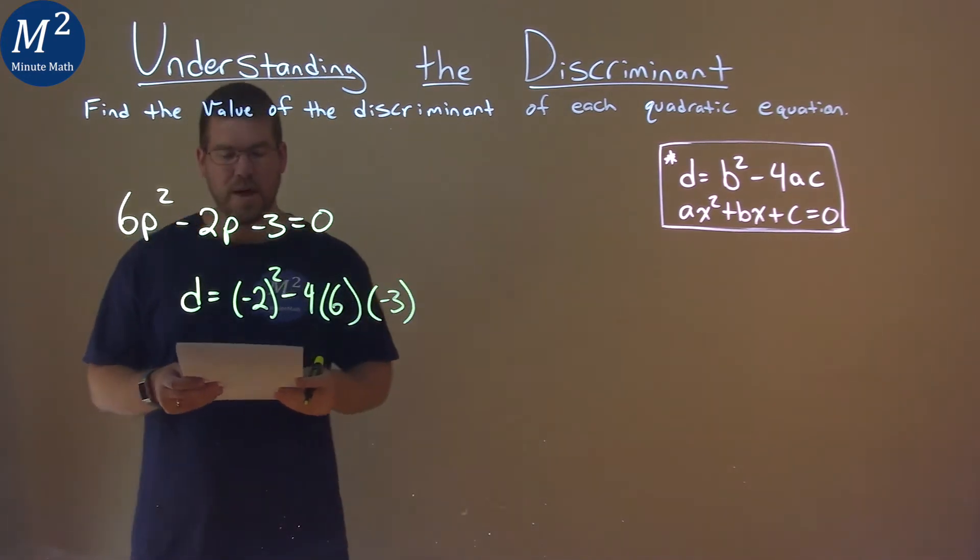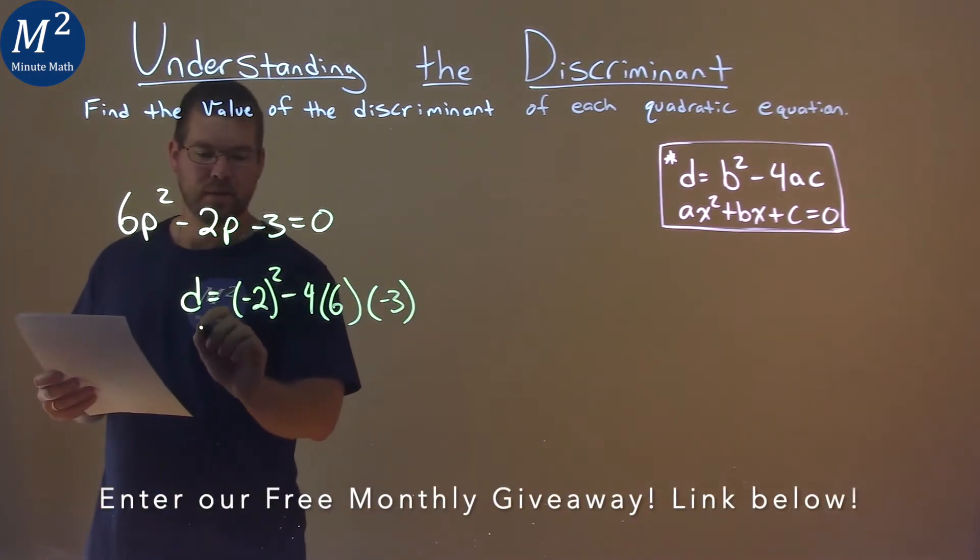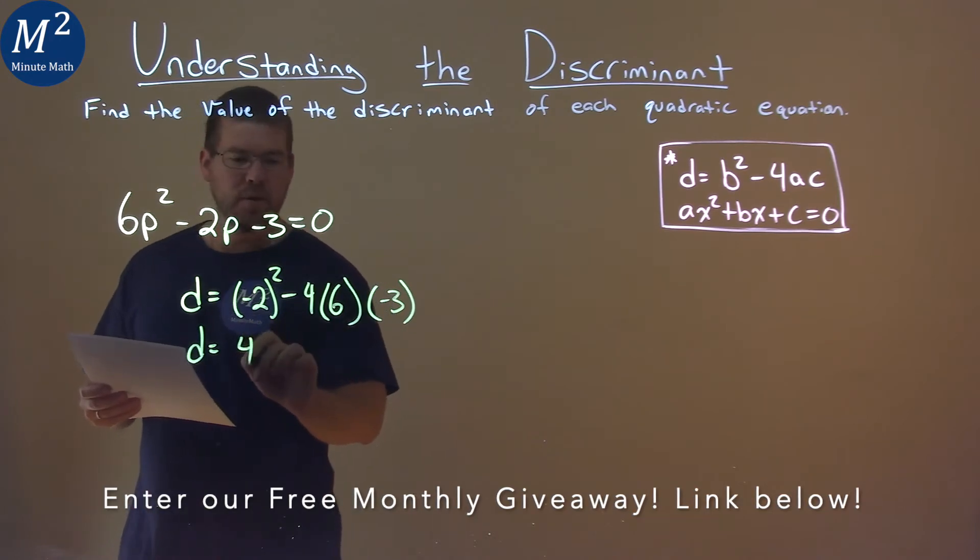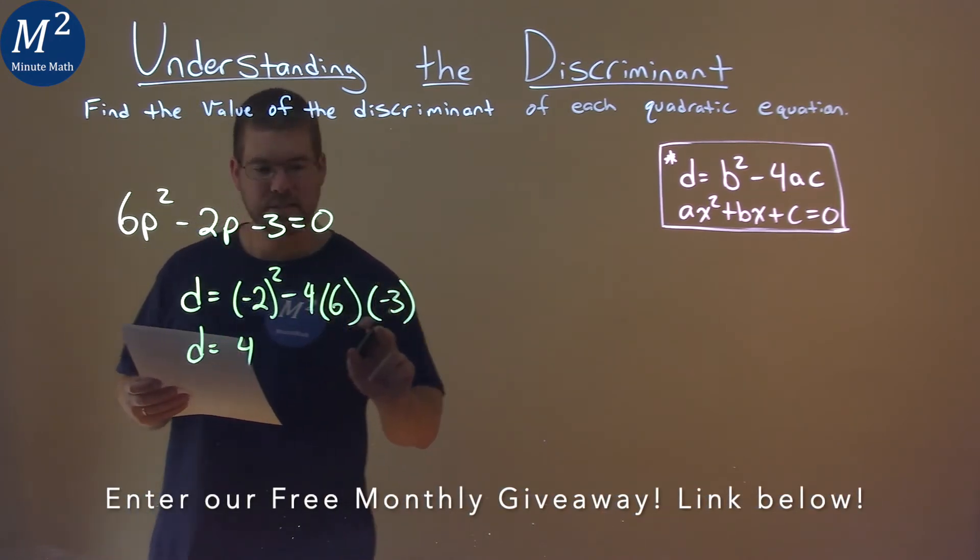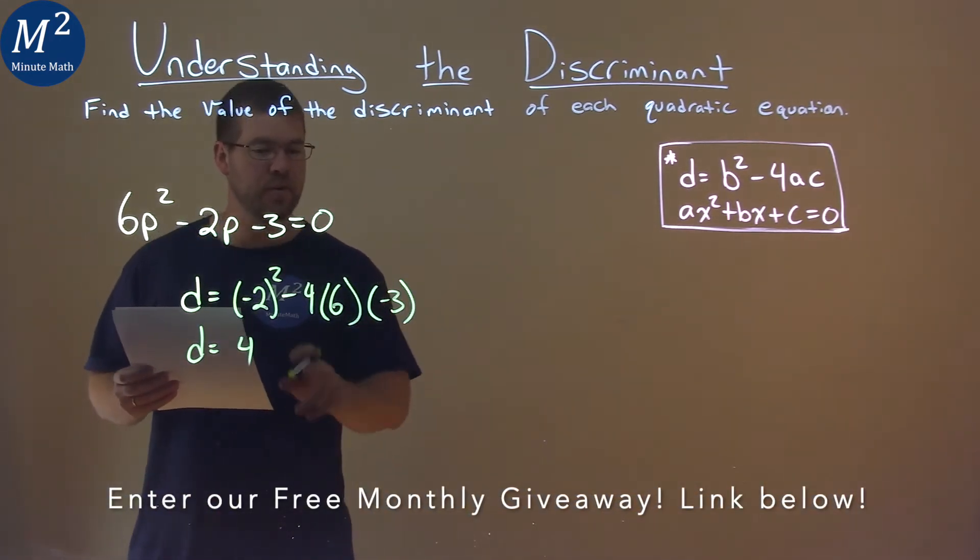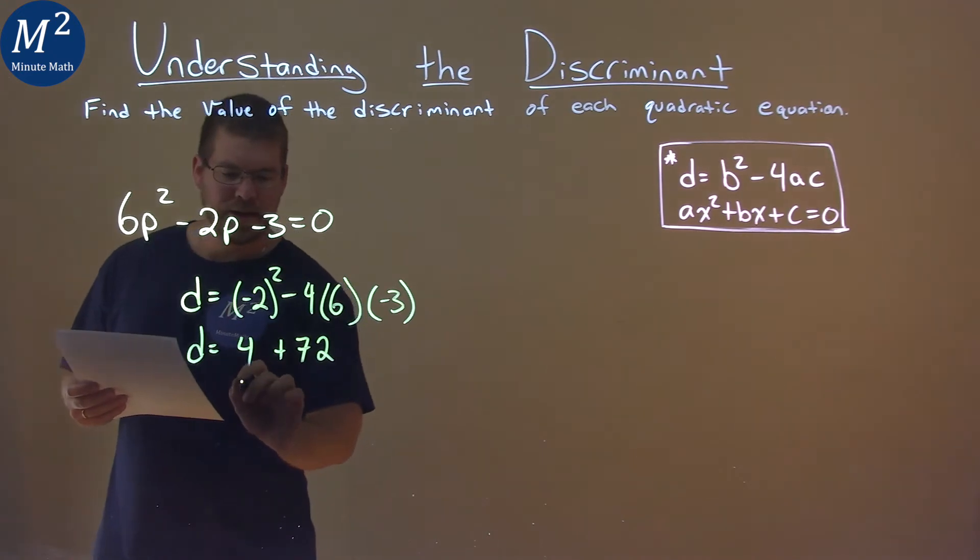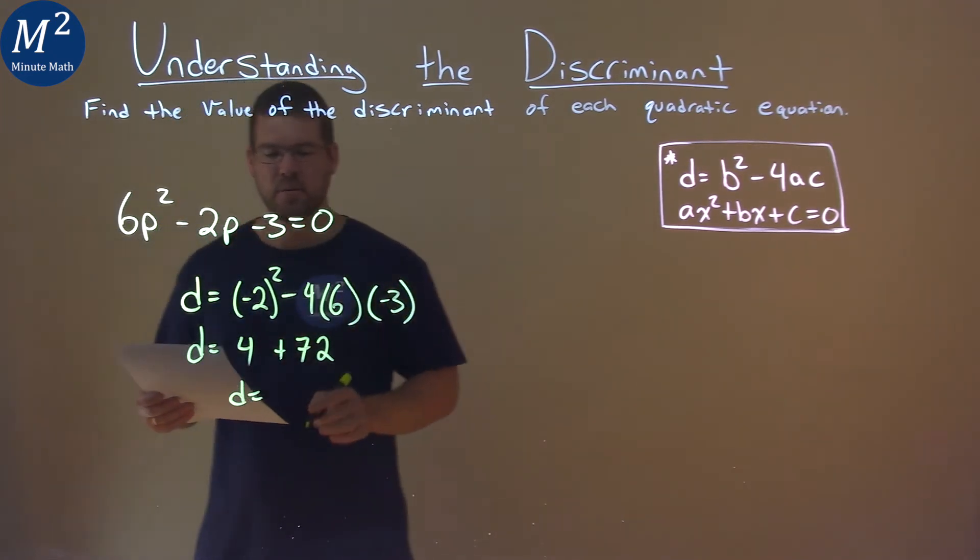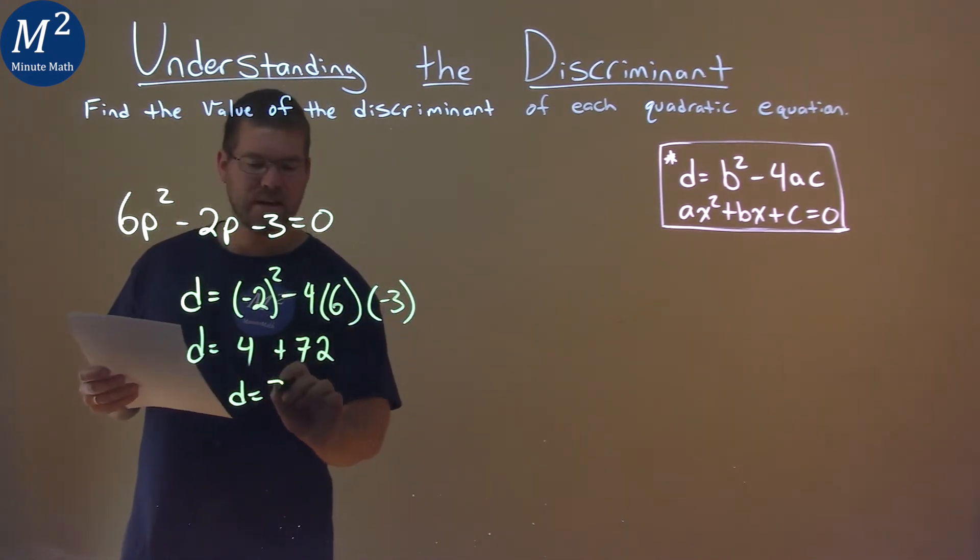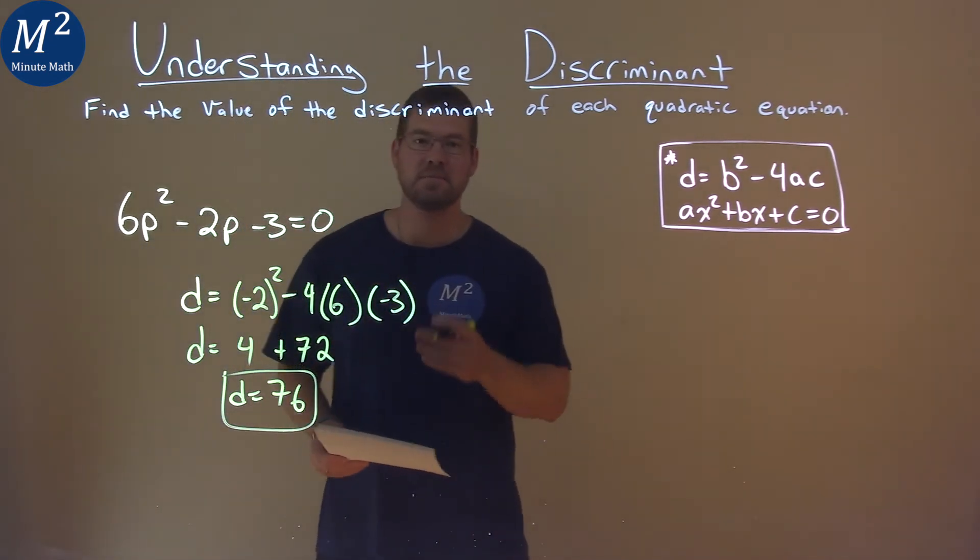And now we have to simplify this. Well, negative 2 squared is a positive 4, and 4 times 6 times 3 is 72. The 2 negatives make positive, so we have plus 72 here. Then we add them together. D equals 4 plus 72, and that is 76. And so our discriminant here is 76.